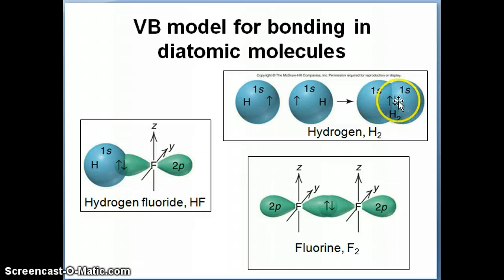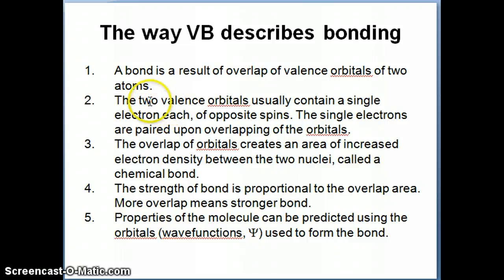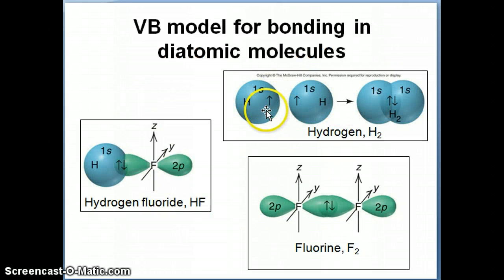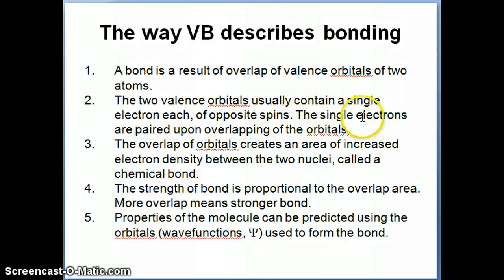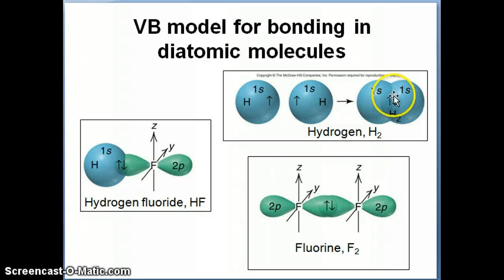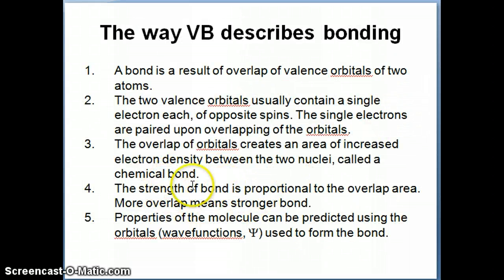That area of overlap — you can calculate its properties because you know the wave function that corresponds to the 1s orbital. Going back to the text, the two valence orbitals that form this bond usually contain a single electron each, just like the example I illustrated. There's one electron on this side, one electron on the other side, and when they form that bond, the two electrons pair up with opposite spins. The overlap of orbitals creates an area of increased electron density between the two nuclei — this area is what we refer to as our chemical bond.